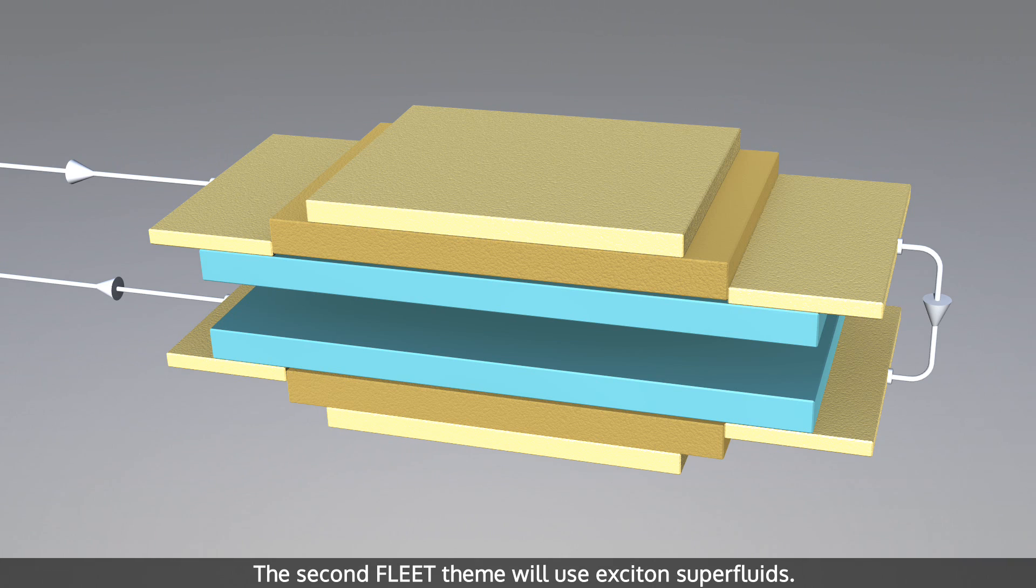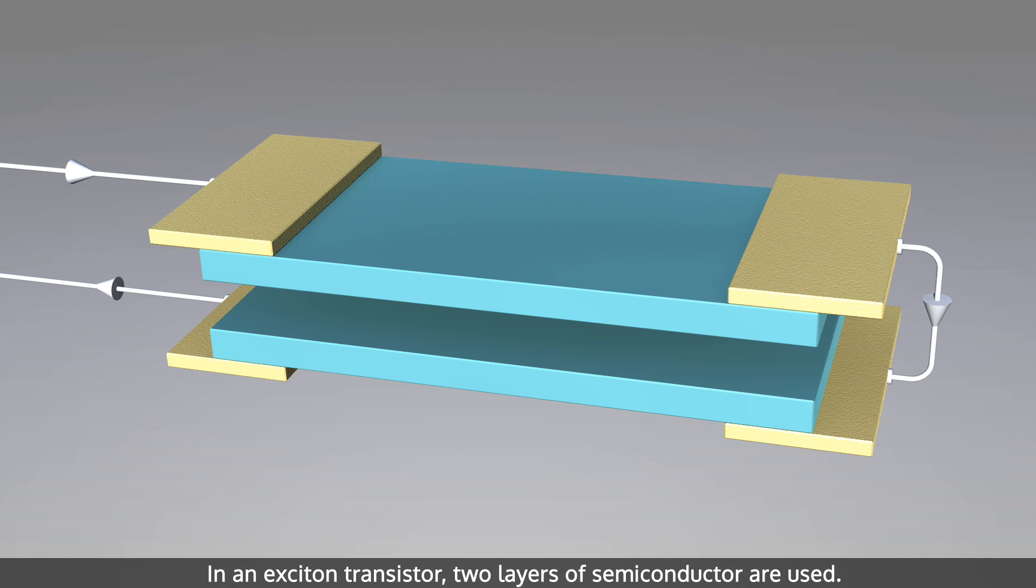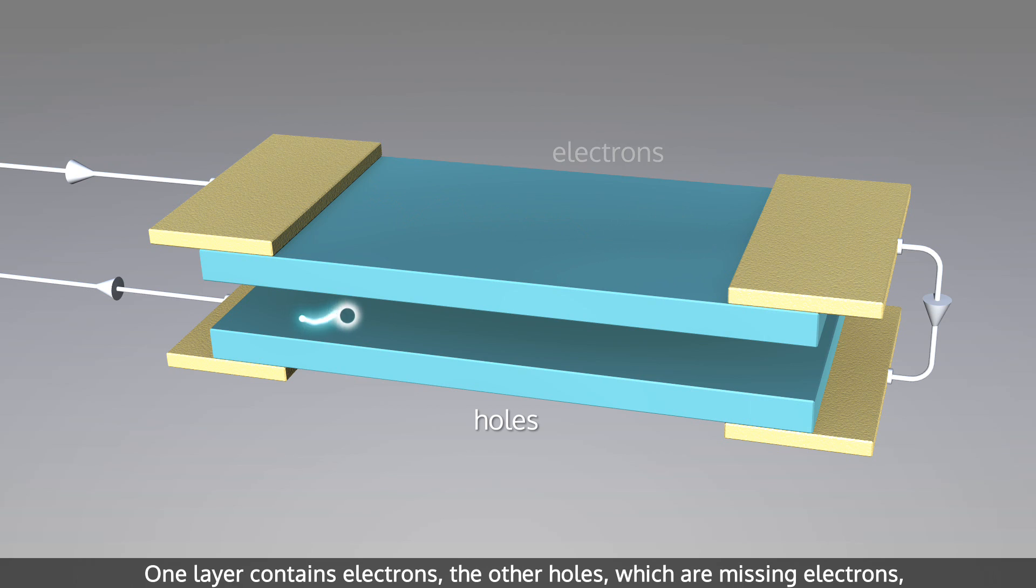The second Fleet theme will use exciton superfluids. In an exciton transistor, two layers of semiconductor are used. One layer contains electrons, the other holes.